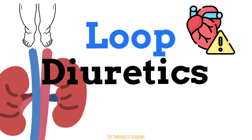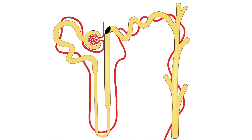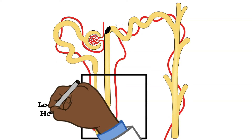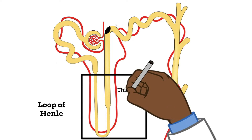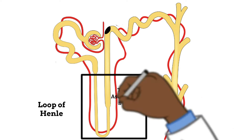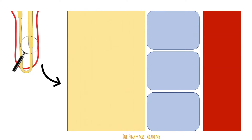The loop diuretics name was derived from the part of the renal tubule that these medications work at — the loop of Henle, specifically at the thick ascending limb of the loop of Henle. When we zoom into the thick ascending limb of the loop of Henle, we see something like this. We have the inside of the tubule, or the pipe that carries the filtrate, the cells, and then the blood next to it.